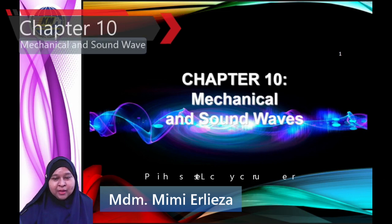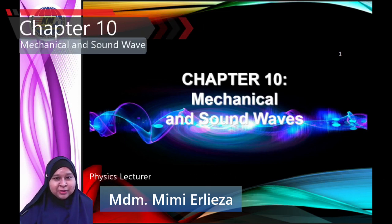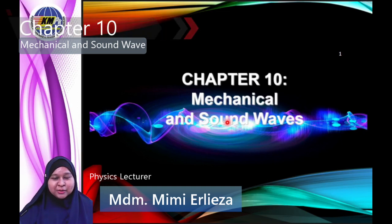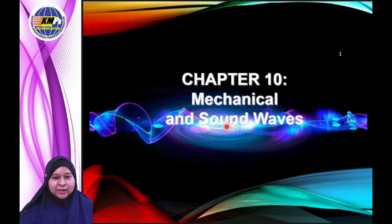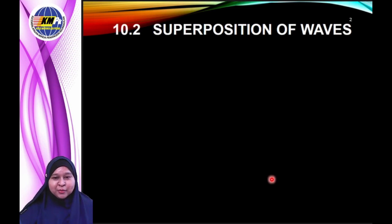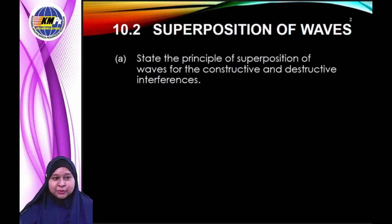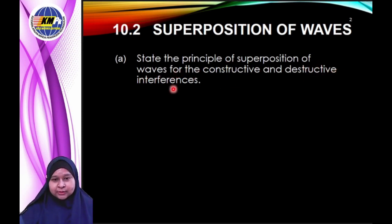Hi everybody. Before this chapter you have been introduced to the subtopic regarding the types of progressive waves, which are transverse waves and longitudinal waves. Today I will explain about the superposition of the wave and the intensity of the wave. By the end of this chapter, you should be able to state the principle of superposition of waves for constructive and destructive interference.